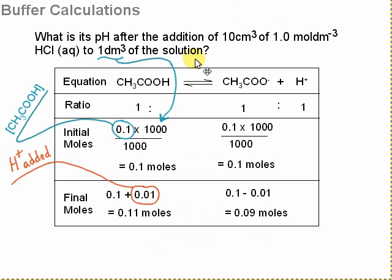What have they been added to? We were told we had one decimetre cubed of the solution. Here's the equation of the weak acid and its salt in a one to one ratio. Initially in the buffer solution, it was a concentration of 0.1 mole per decimetre cubed for the weak acid, and both of these are the same for the conjugate base. Because it's one decimetre cubed, we can work out that the number of moles of the weak acid was 0.1, and the number of moles of CH3COO- was also 0.1.